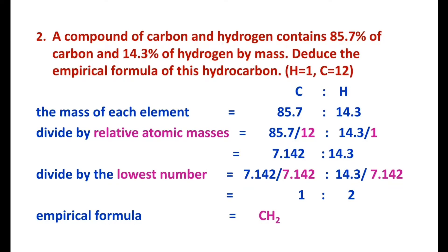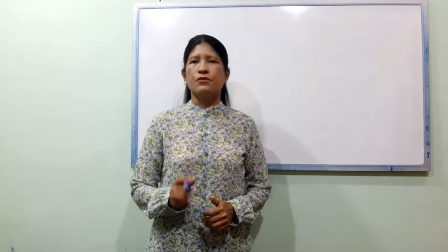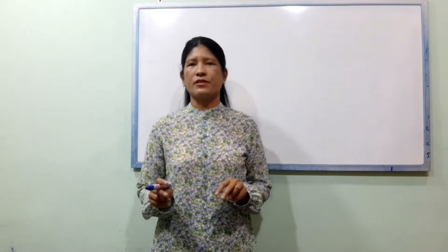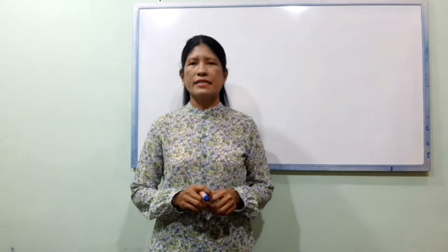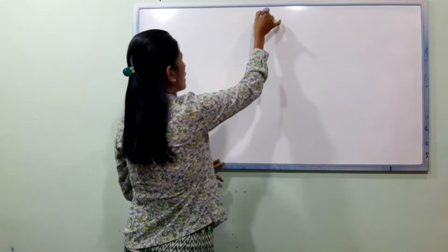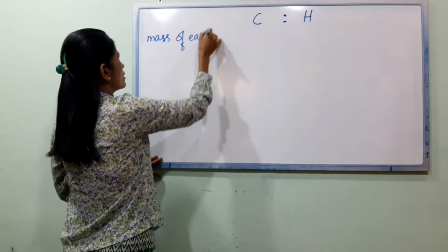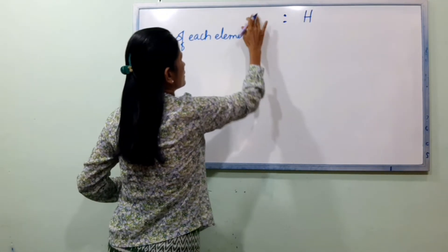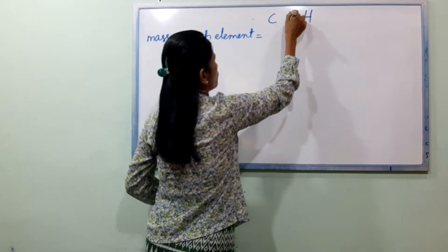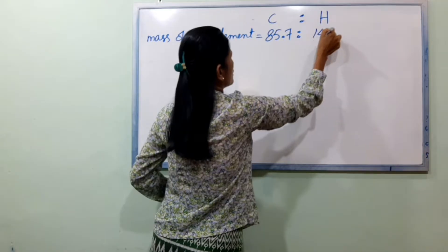Example 2: A compound of carbon and hydrogen contains 85.7% carbon and 14.3% hydrogen by mass. Deduce the empirical formula of this hydrocarbon. The mass of each element is: carbon 85.7% and hydrogen 14.3%.